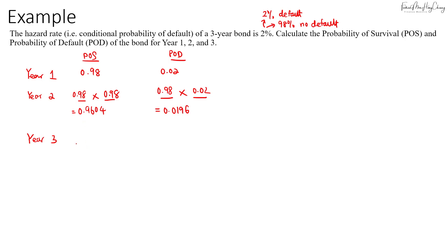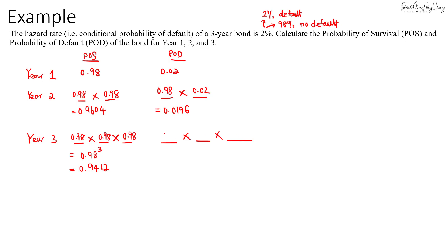For year three, the probability of survival means we have survived all three years, so that's 0.98 times 0.98 times 0.98, or 0.98 to the power of three, which equals 0.9412. The probability of defaulting in year three means we survived years one and two and then defaulted in year three: 0.98 squared times 0.02, giving us 0.01921.